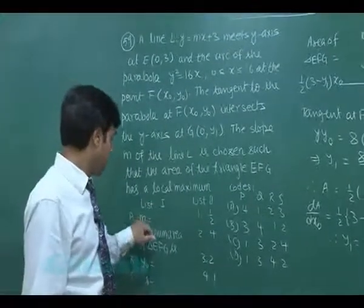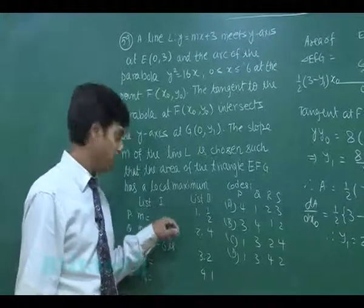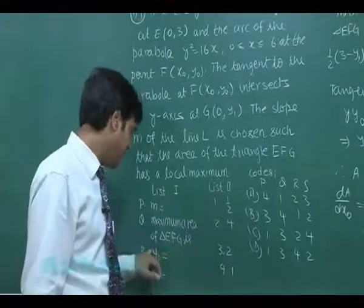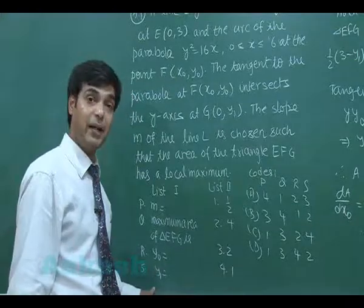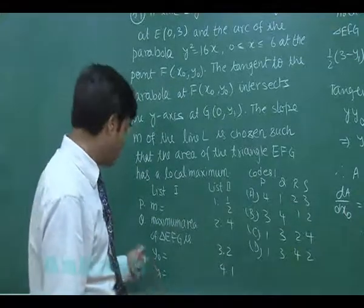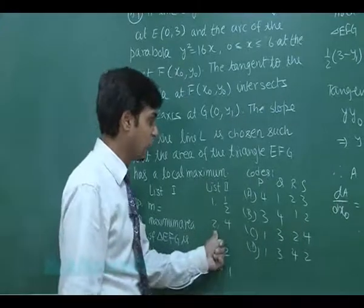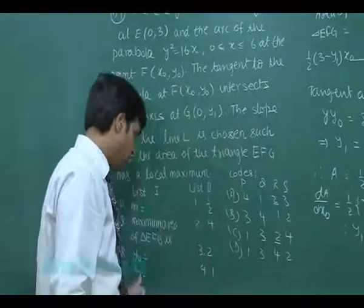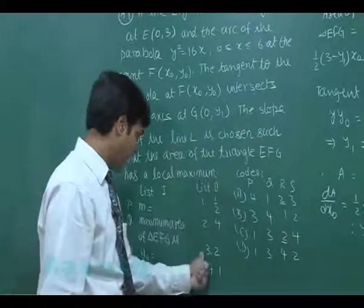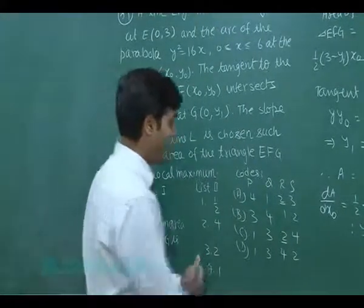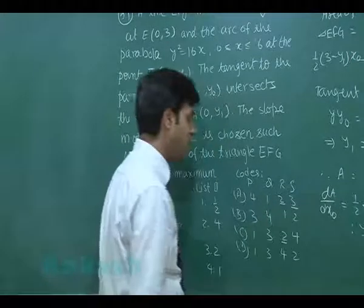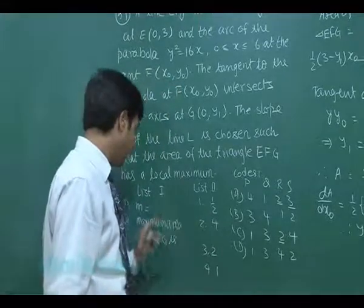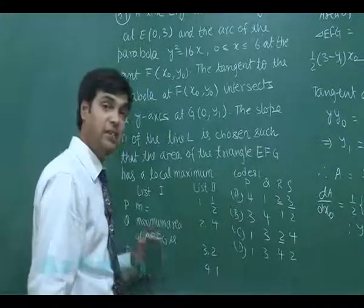Now we can do the matching from list one to list two. They ask for m, maximum area of triangle EFG, y₀, and y₁. We obtained y₀ = 4, so R is matched with 2 (value 4). y₁ = 2, so S is matched with 3 (value 2). We can already confirm the correct answer is option A, but we still need m and the maximum area.